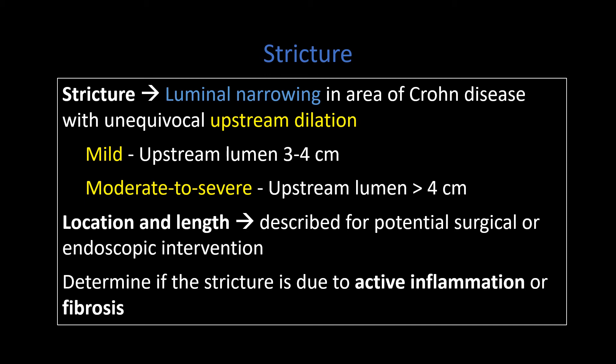The last thing to consider is whether the stricture results from active inflammation — where you see inner wall hyper-enhancement, mural stratification, and maybe some mesenteric edema — or if it's due to fibrosis, which often manifests as transmural delayed enhancement without submucosal edema.